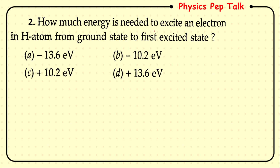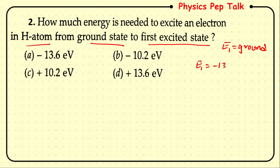Next: how much energy is needed to excite an electron in a hydrogen atom from the ground state to the first excited state? The ground state of hydrogen is E₁, called the ground state. E₁ = −13.6 eV / 1² = −13.6 eV.